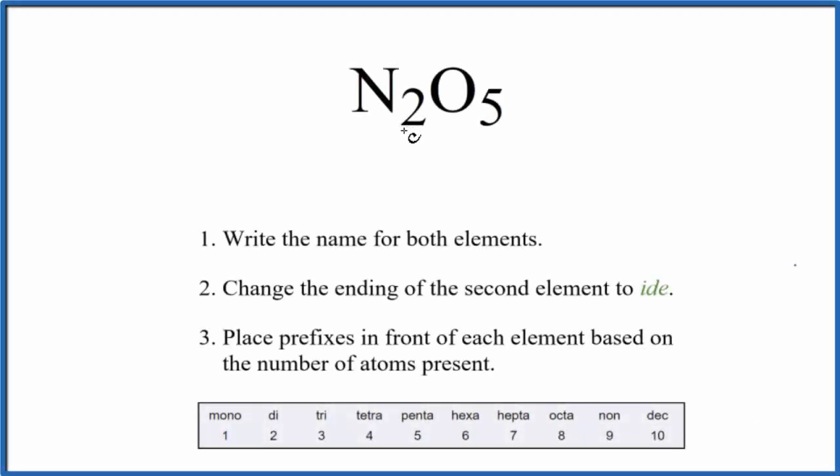To write the name for N2O5, we first need to realize that we have a molecular compound here.